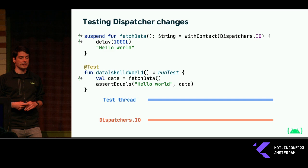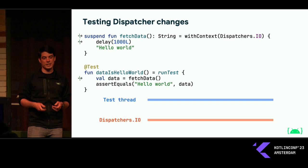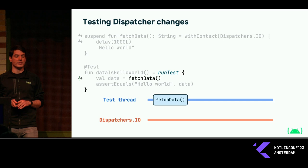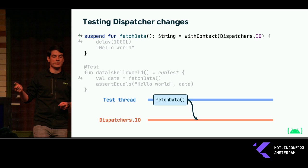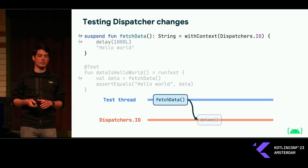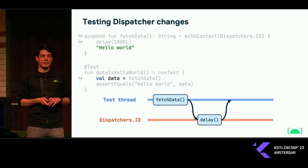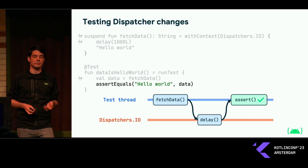To visualize this, we'll use visuals where we have two threads represented: one is the main test thread, and the other is a thread from the IO dispatcher. As we start our test, we call fetchData on the test thread. We go into the body of fetchData where a withContext call happens, taking us from the test thread into the IO dispatcher, where we perform a real one second delay. As we exit that function and withContext, we get back our string and perform an assertion, which is successful. We just have the delay that we really don't want to be a real delay in a test.